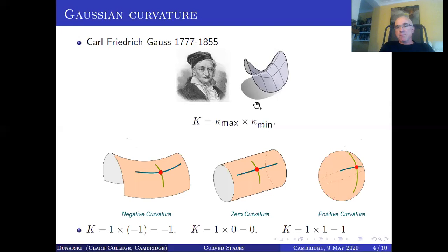So let's look at some examples. For a sphere, you see whatever point we choose, the only curves we'll get by slicing it with perpendicular planes will be circles. And the circles will all bend in the same direction. So if the radius of the sphere is one, then kappa max and kappa min will both be equal to one. And so will the Gaussian curvature of the surface. Well, the surface of a sphere has a positive Gaussian curvature equal to one.